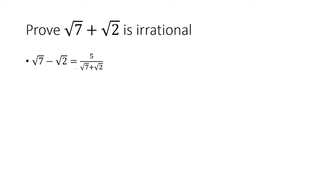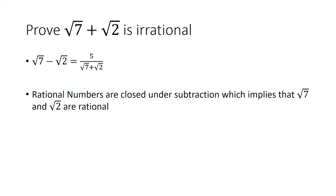Now let's go back to this. The number on the right we said is rational; therefore this expression on the left is rational. And rational numbers are closed under subtraction — if you take a rational number and subtract another rational number, the result is a rational number. So that means that the square root of 7 and the square root of 2 are both rational.